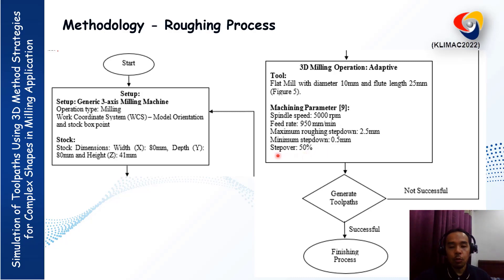Here we use a step-over of 50%. After completing the setup information for the roughing process, we generate the toolpath. If successful, we proceed to the finishing process.